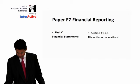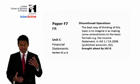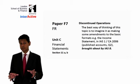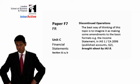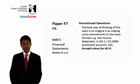The best way of thinking about this topic is to imagine it as making some amendments to the basic formats — the income statement in IAS-1 and the Companies Act 2006. The kind of situation you're dealing with is a company based in the UK, subject to the Companies Act 2006, but operating with overseas interests. It's called Published Accounts, and it's the subject of question two.